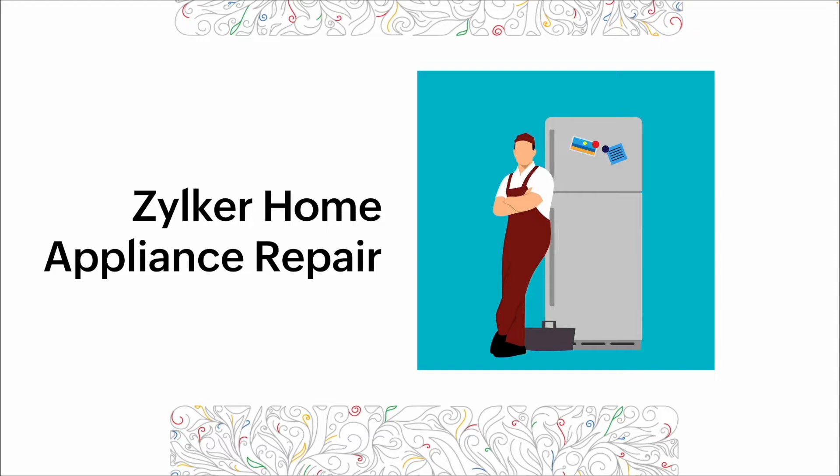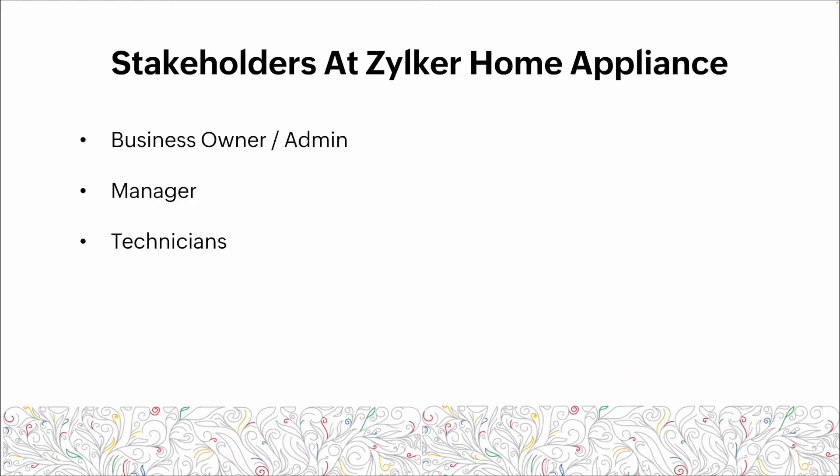So Zilker Home Appliance Repair. Within the company, we have three different levels of stakeholders. Our top role is our business owner, who also in this case is serving as our admin. Next, we have our mid-tier — our managers — and last we have our technicians, who are going to be the main group of users within the solution.